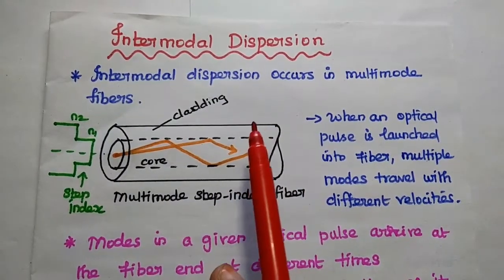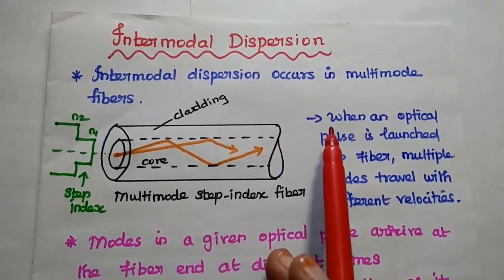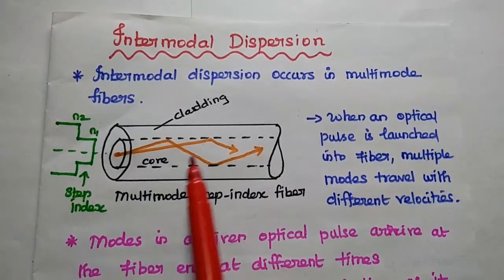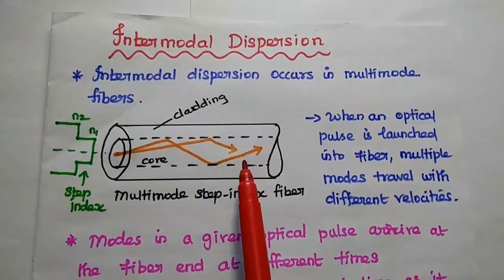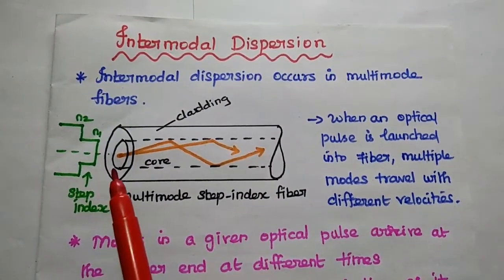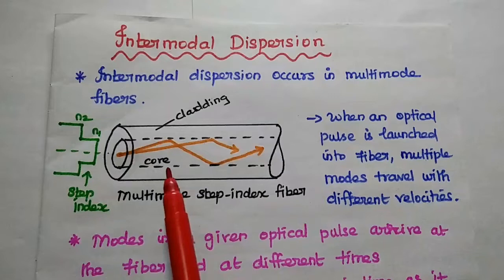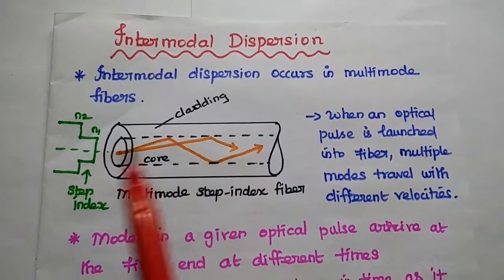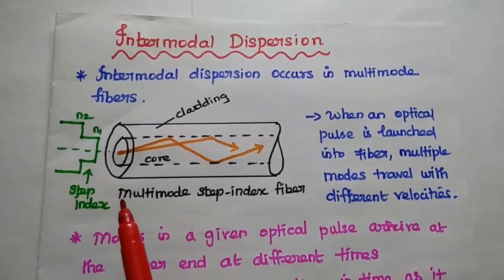Intermodal dispersion occurs only in multimode fibers because in multimode, multiple light paths are available. So when an optical pulse is given to this fiber, multiple light paths are created inside this core axis based on the refractive index.